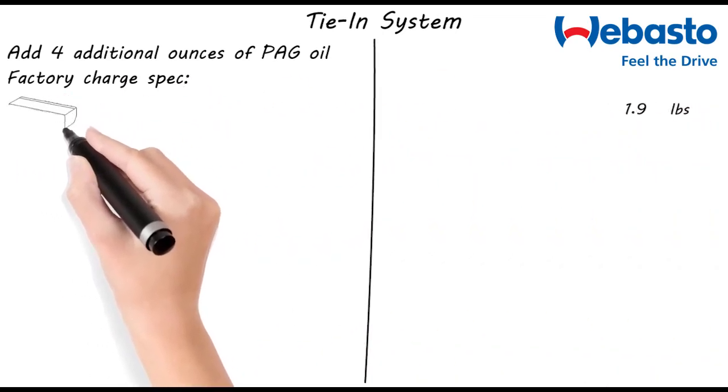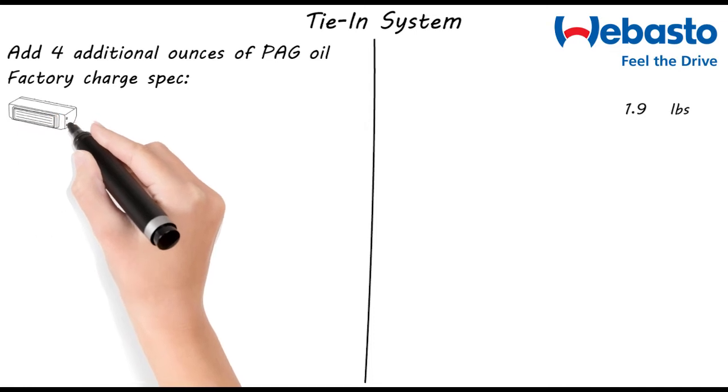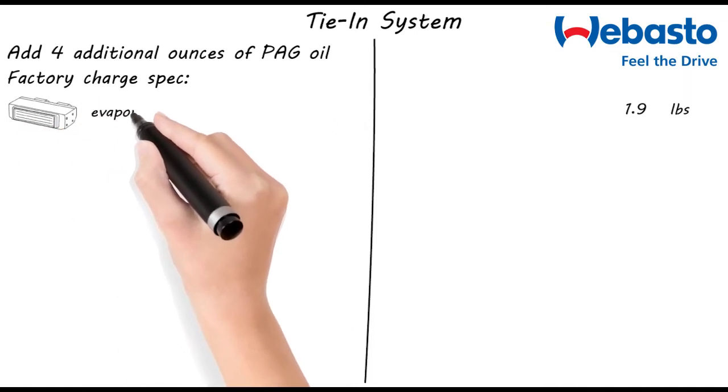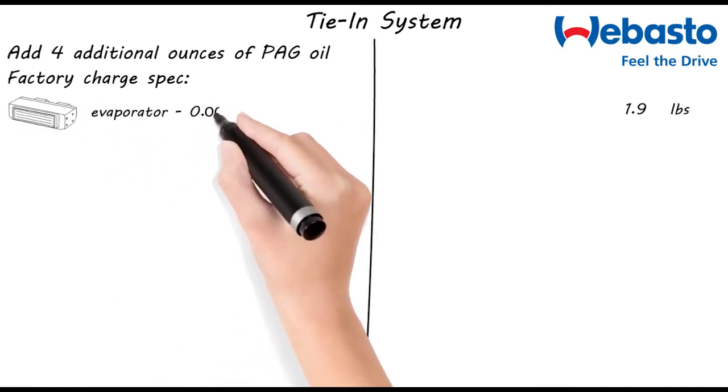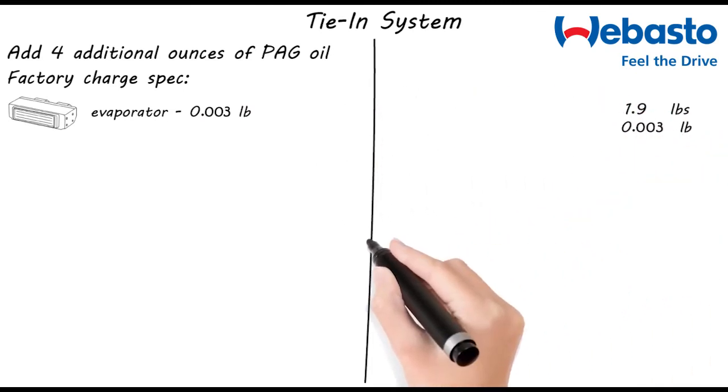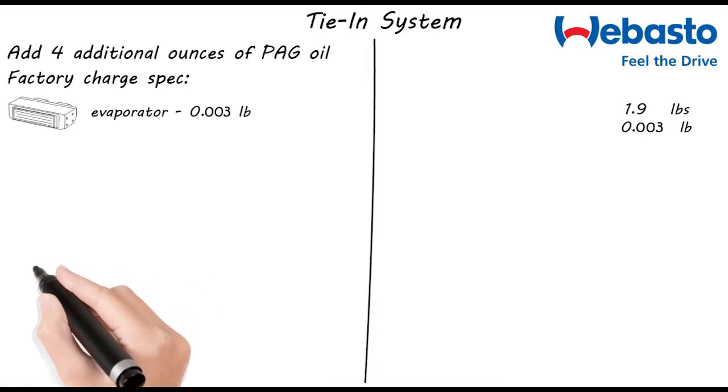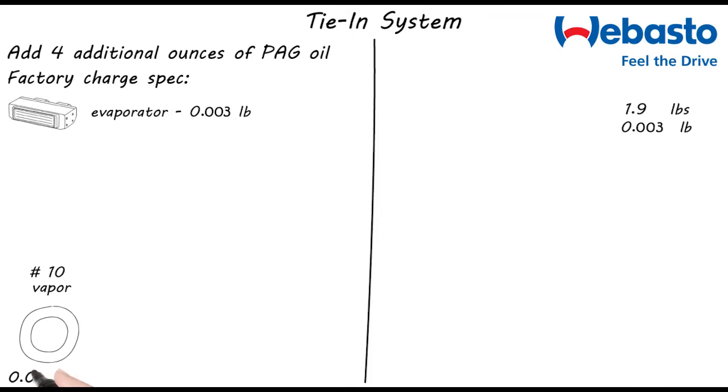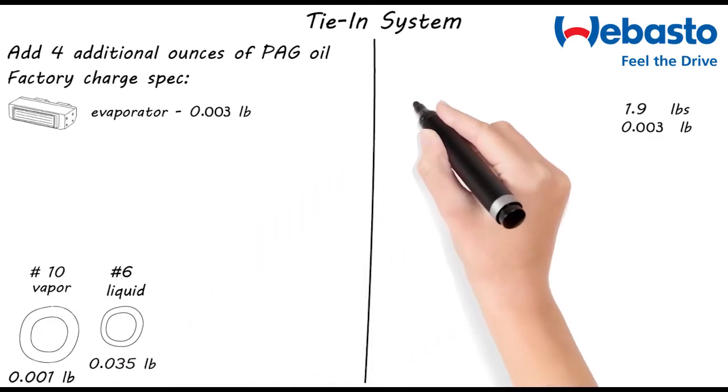Each component in the system will require a certain amount of refrigerant to be added. In this system, the evaporator will require 0.003 pounds of refrigerant. We'll put that over here with the factory charge spec for later. The next consideration is the length of hose used in your installation. We'll add 0.001 pounds per foot of number 10 hose on the vapor side and 0.035 pounds per foot of number 6 hose on the liquid side as an example.